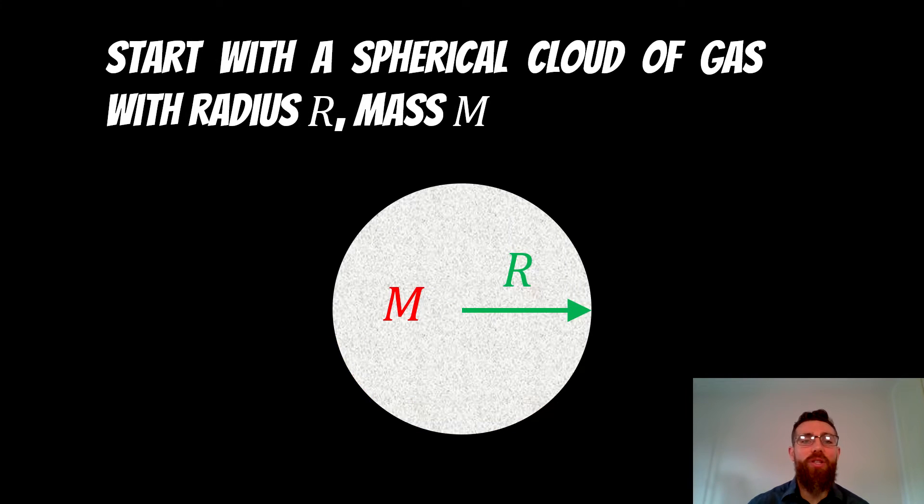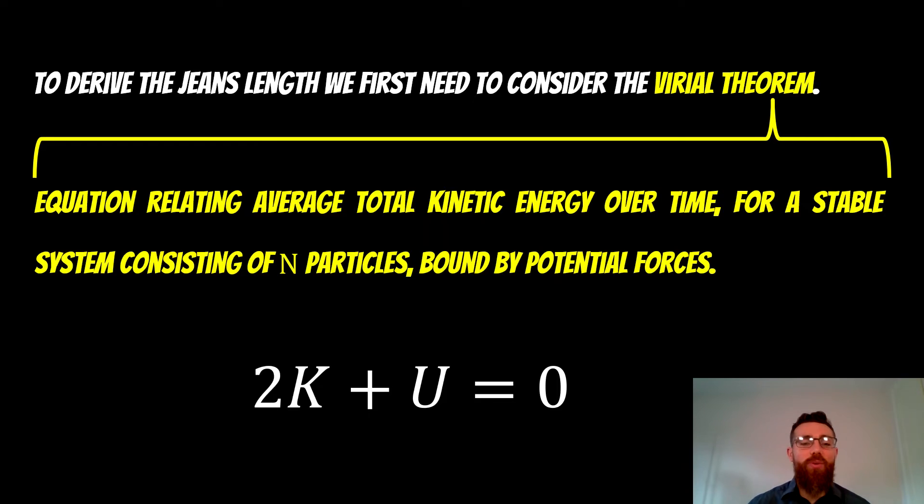Starting with this spherical cloud of gas, it's going to have some radius R and some mass M. That is our starting point. We've got this sphere of gas, radius R, and mass M. Now to do this, we need to actually start with the virial theorem.